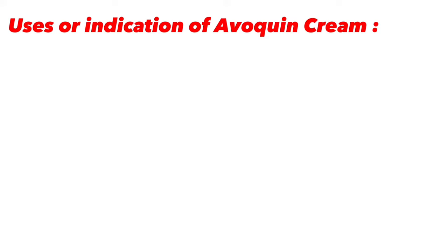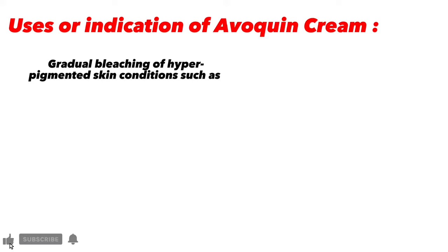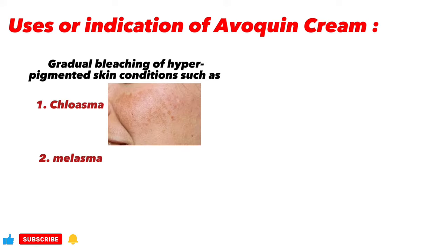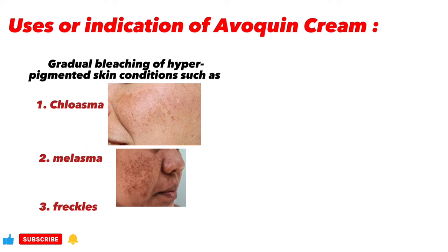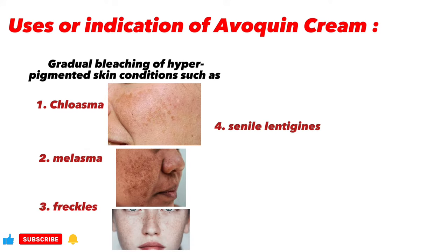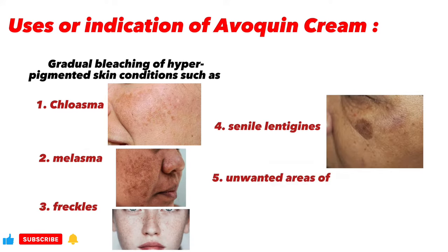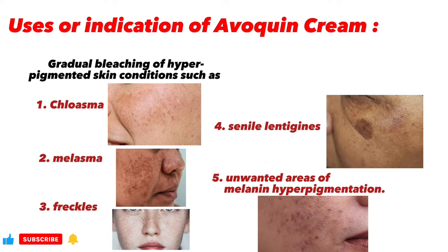Uses or indications of Avaquin cream: gradual bleaching of hyperpigmented skin conditions such as: 1. Chloasma, 2. Melasma, 3. Freckles, 4. Senile lentigines, and 5. Unwanted areas of melanin hyperpigmentation.